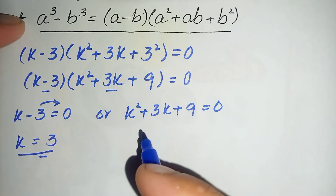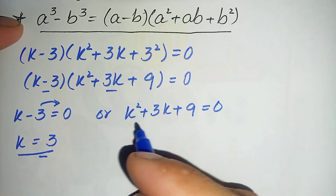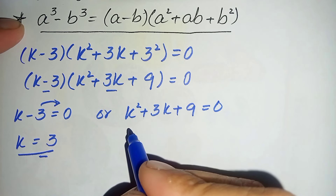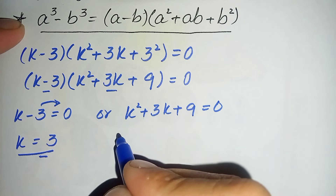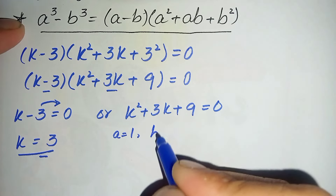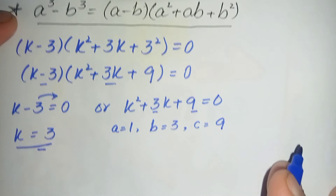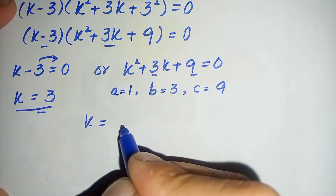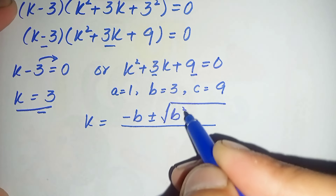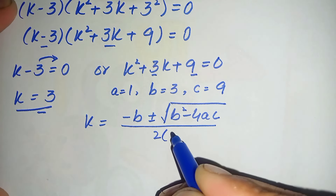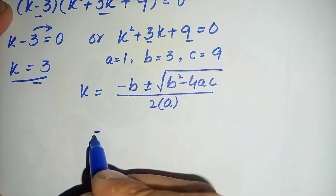Now we will solve the quadratic equation k squared plus 3k plus 9 equals zero. The roots may be real or imaginary depending on the coefficients. We will use the quadratic formula since it cannot be solved by factorization. Here a is 1, b is 3, and c is 9. The quadratic formula is: k equals negative b plus or minus square root of b squared minus 4ac, divided by 2a.